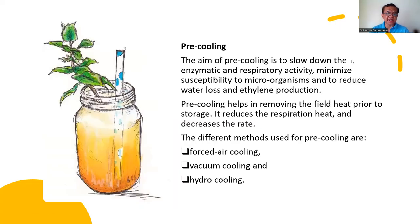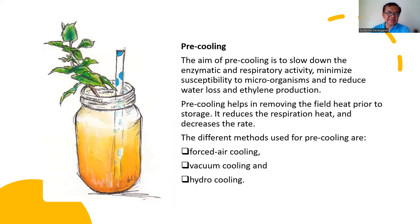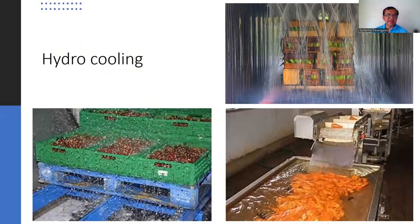The quality of produce presented to the consumer depends on the initial quality of the harvest, care taken during physical handling, length of time since harvest, and the storage environment. The aim of pre-cooling is to slow down enzymatic and respiratory activity, minimize susceptibility to microorganisms, and reduce water loss and ethylene production. Pre-cooling helps remove field heat prior to storage and decreases the respiration rate. Methods for pre-cooling include forced air cooling, vacuum cooling, and hydro-cooling.